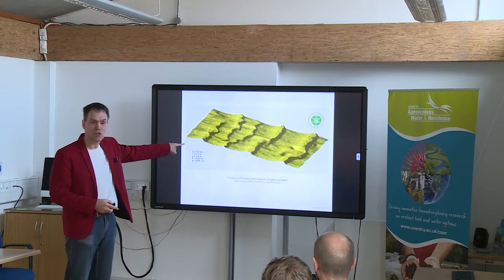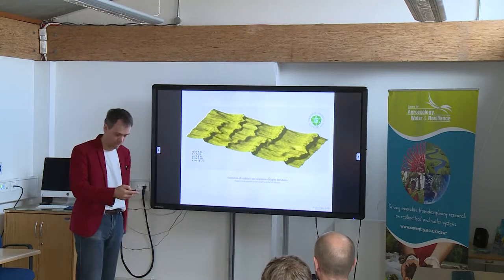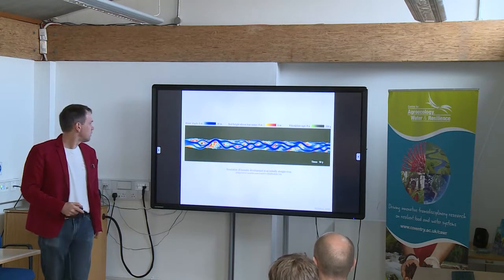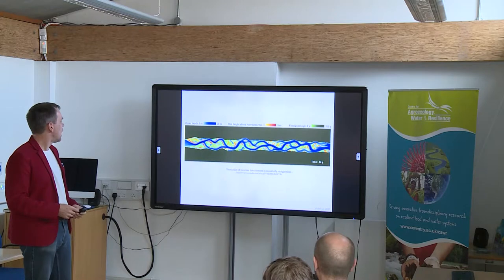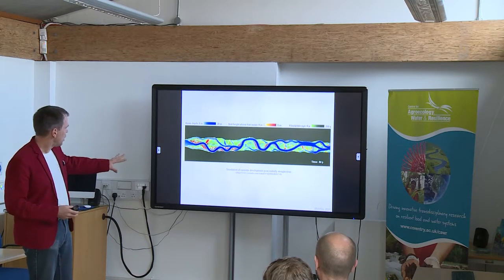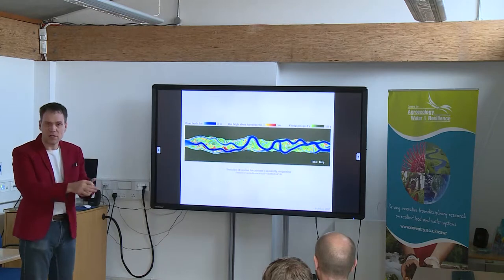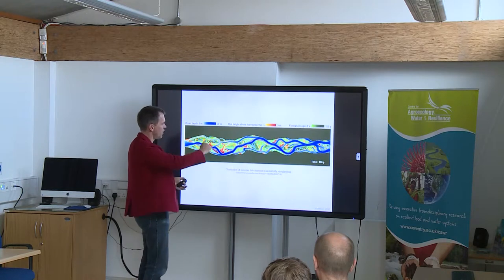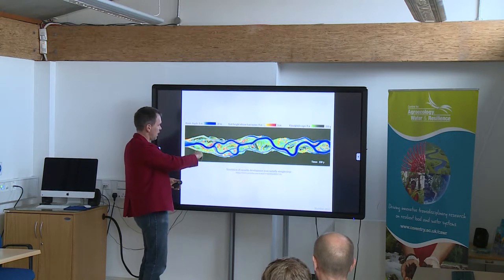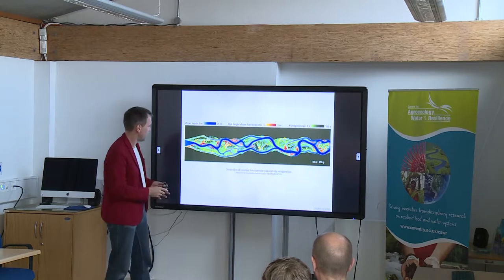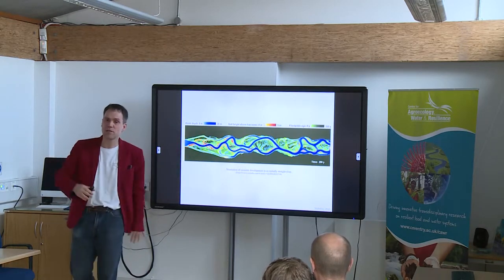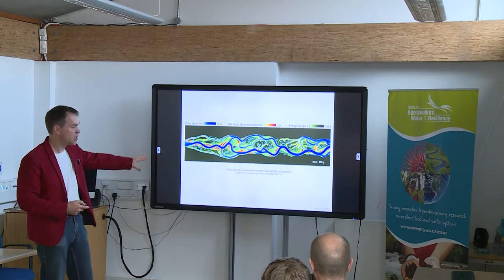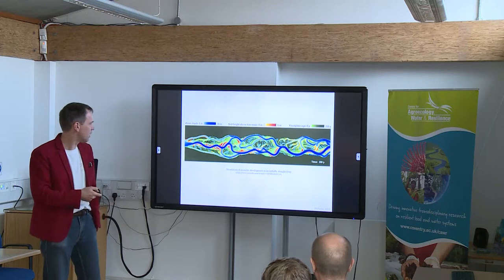At no point did the model say 'thou shalt create dunes.' Here is another one — a simulation of how, over a period of about 300 years, from an initially straight idealized channel, you get meandering rivers appearing. You can see how the river is moving and migrating, sometimes you get channel cut-offs. In green you see when the floodplain was last inundated at those locations, and how the landscape around the channel is continuously changing. That is a nice simulation by Andy Nicholas.